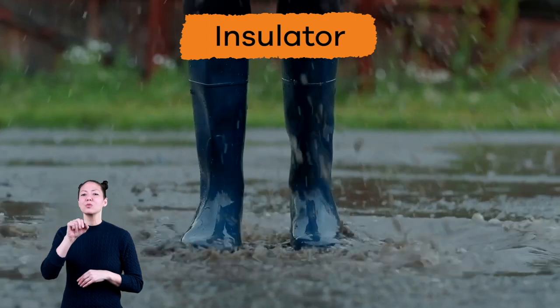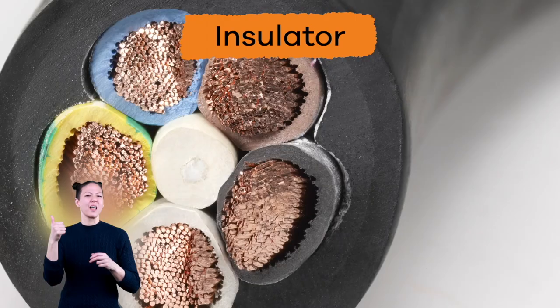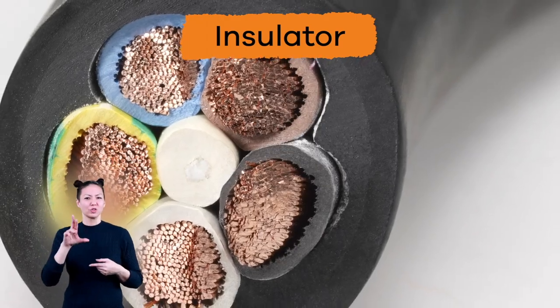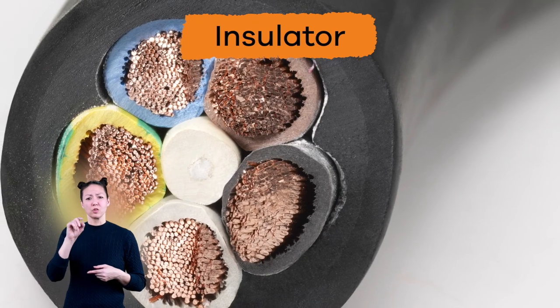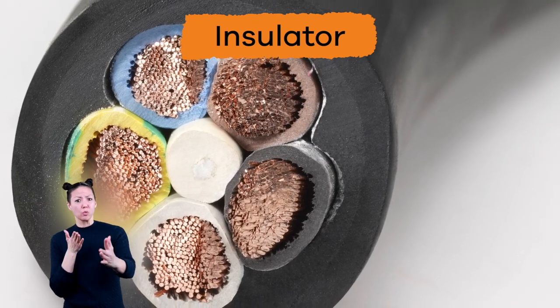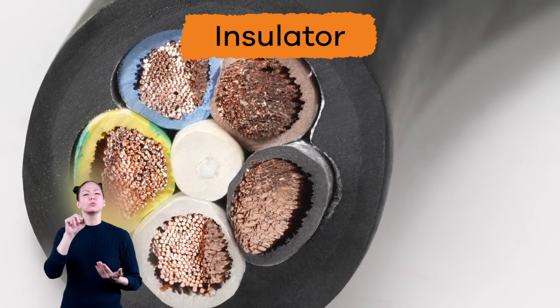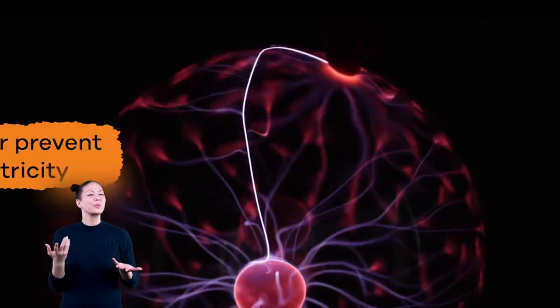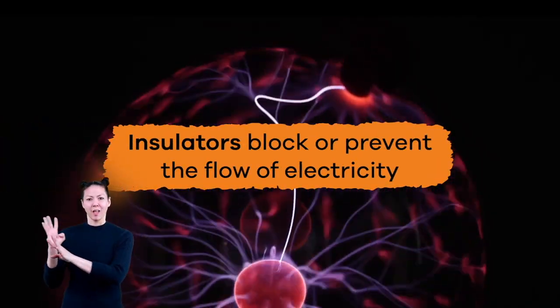Insulators, on the other hand, are the opposite of conductors. So, if conductors allow electricity to flow then, what do you think insulators do? They block or prevent the flow of electricity.